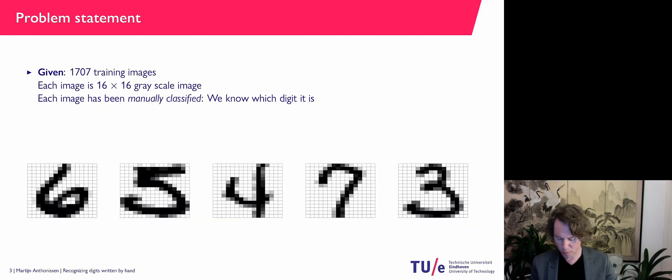So let's first go to a problem statement. We have a training set provided by the US Postal Service. We have 1707 training images and a training image.